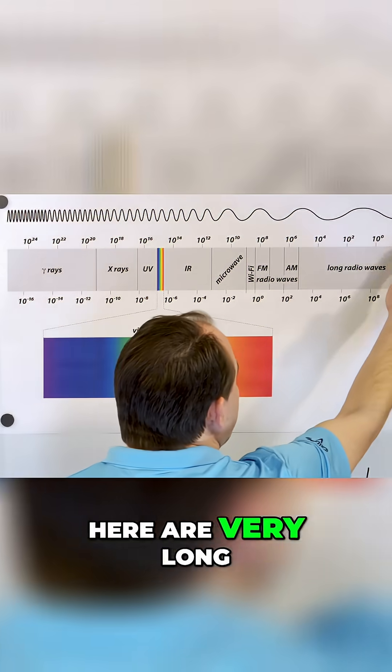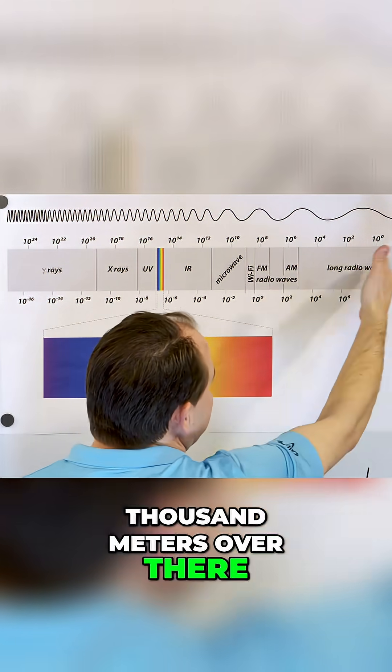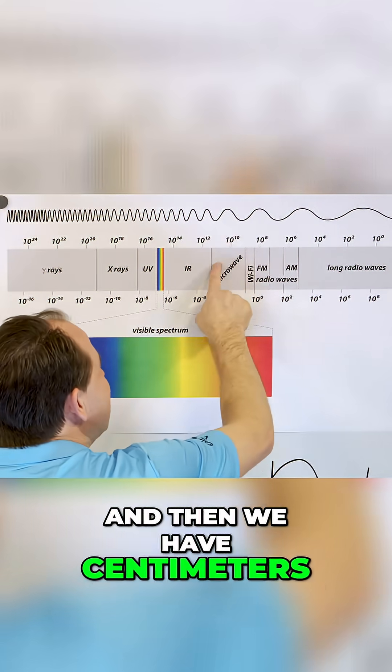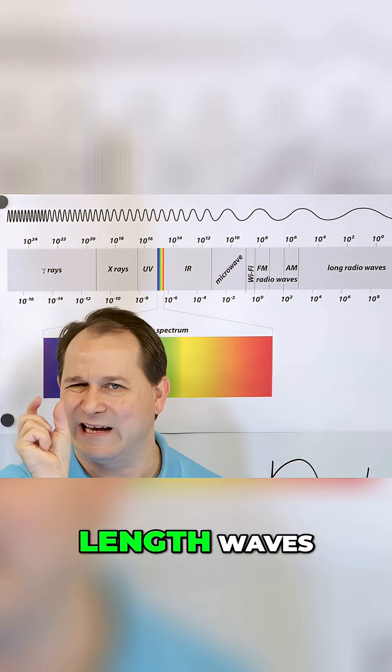So these waves over here are very long. This is like a hundred meters, this is like a thousand meters over there, and even longer. And then we have centimeters which are in your microwave. So the microwave oven has centimeter-length waves.